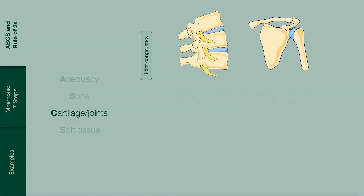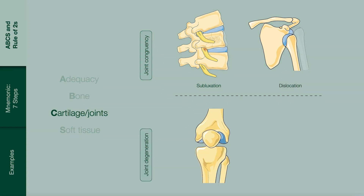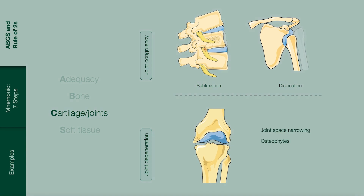Cartilage. Assess joint congruency. Subluxation is when the joint is partially intact. Dislocation is when there is no contact between the articular surfaces. Assess for signs of cartilage degeneration or osteoarthritis. Look for joint space narrowing, osteophytes, subchondral sclerosis and subchondral cysts.